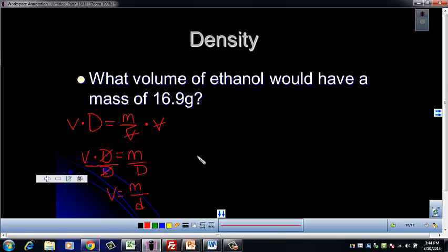Let's plug in what we know. Volume equals our mass from the problem, 16.9 grams. There's no density in this problem, so I'm going to have to find that information in your reference table. On the second page, it shows a table with densities of different things. Look up ethanol, and you should find that it's 0.7893 grams per centimeter cubed.